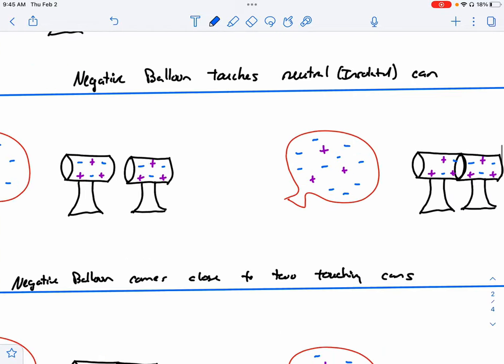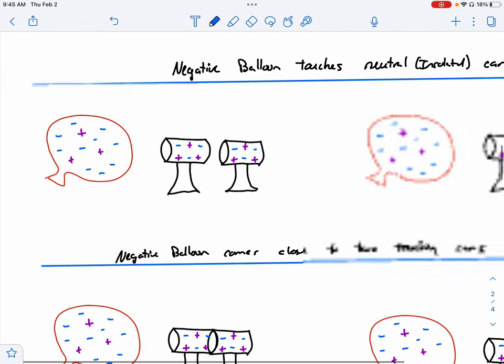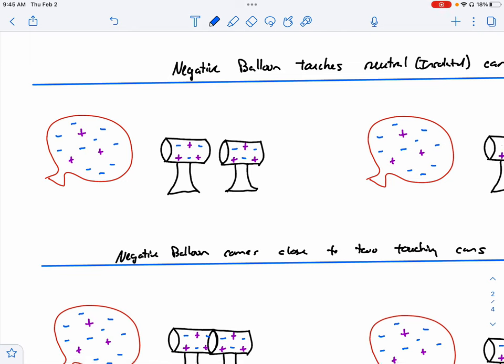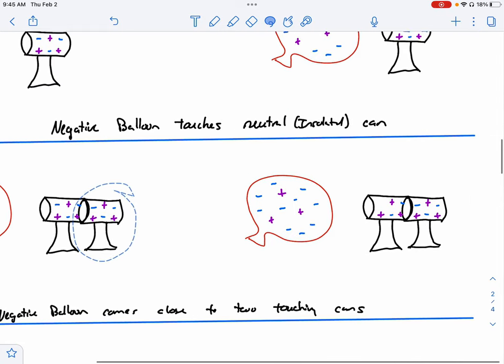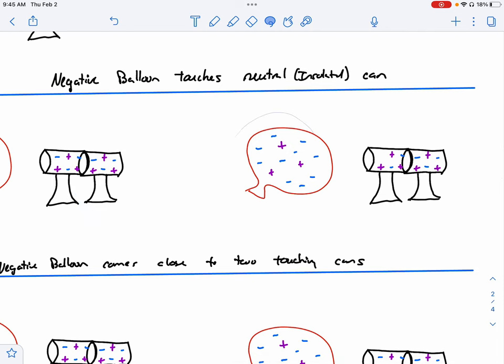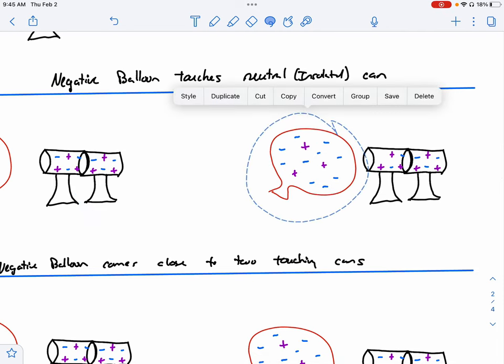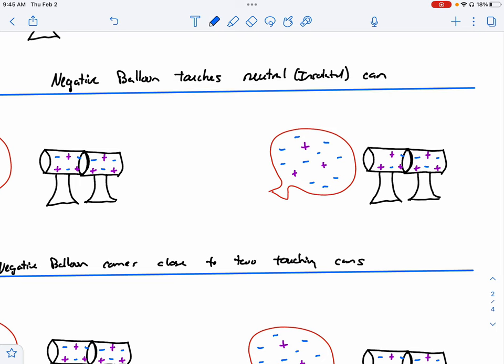All right. Now, what does that look like if we're not touching it? So let's say we come close. Well, if I have two cans here that are right next to each other, they're neutral before the balloon is close, they're still neutral. When the balloon comes next to those two cans, so let's say that negative balloon gets close, remember, it's going to repel the electrons. So a lot of those electrons that were there are going to rush over to this side.